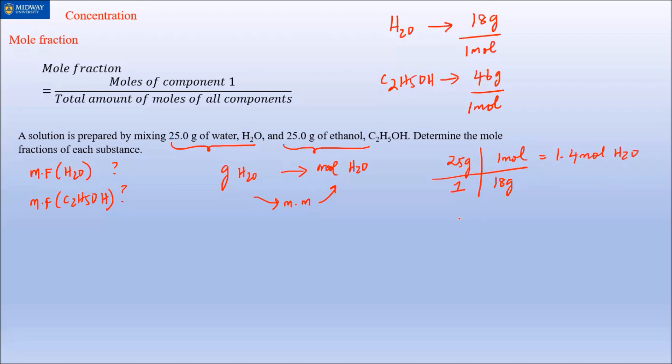You do the same for your ethanol. That will be 25 grams, same over 1, and ethanol's molar mass is 46 and 1 mole goes on the top. So 25 over 46 is roughly about 0.54 moles. This is moles of ethanol.